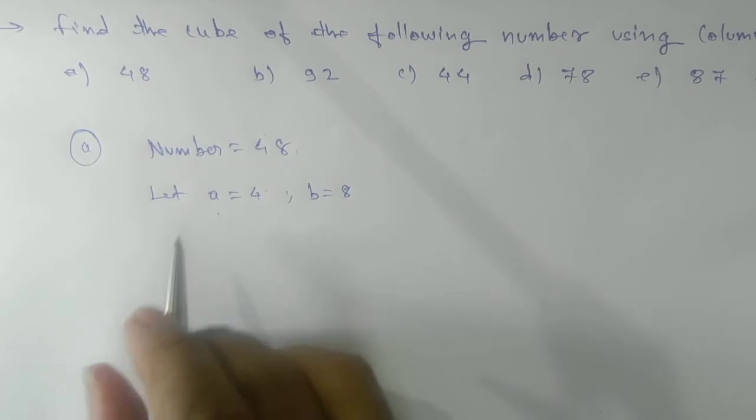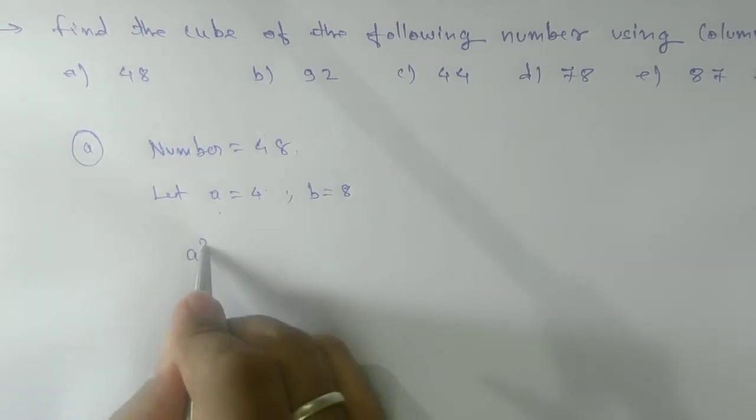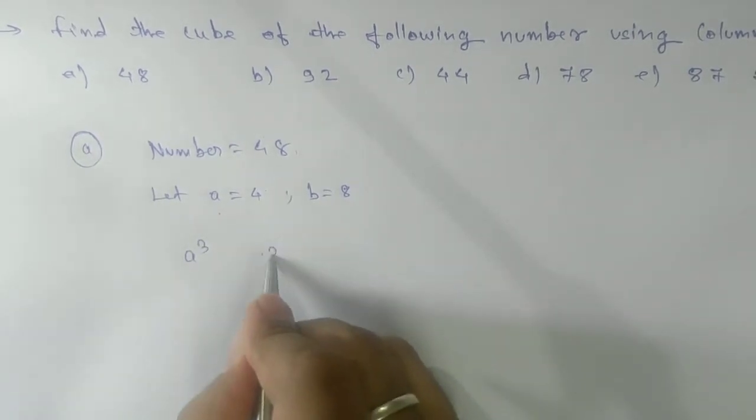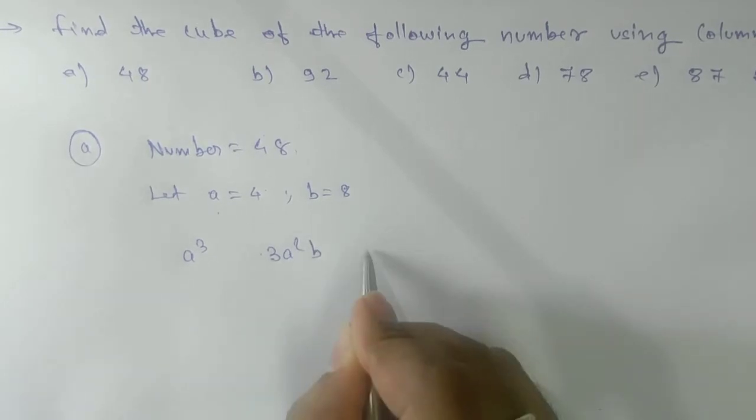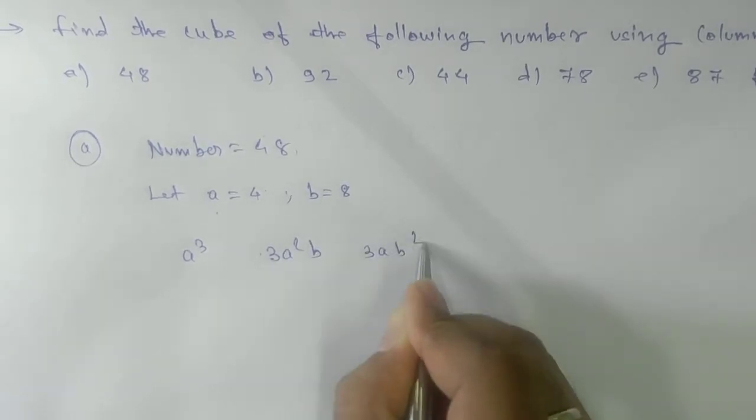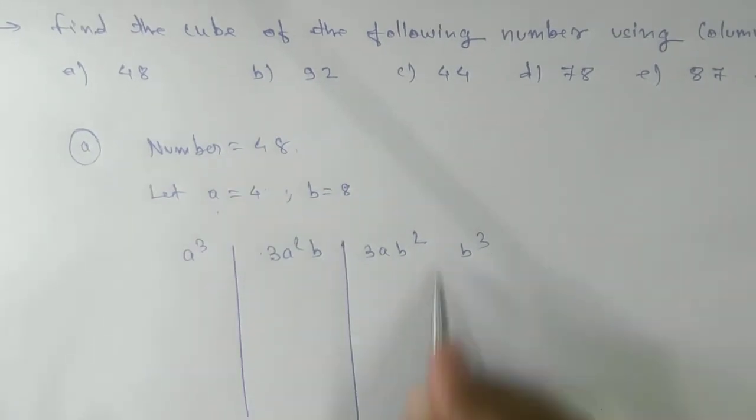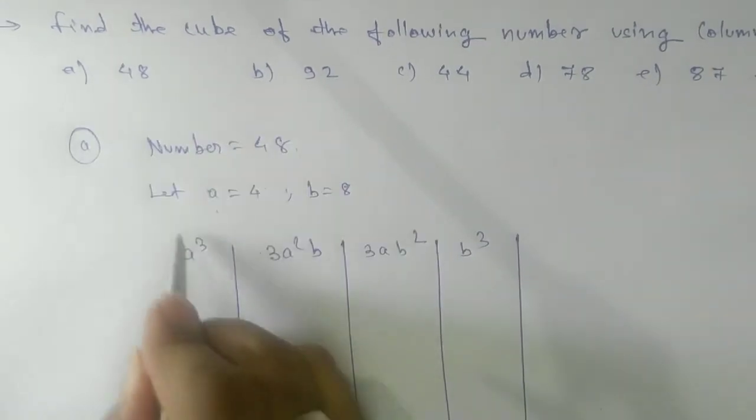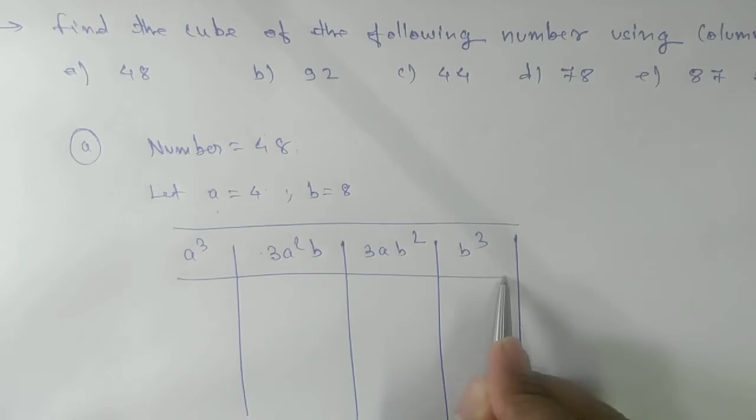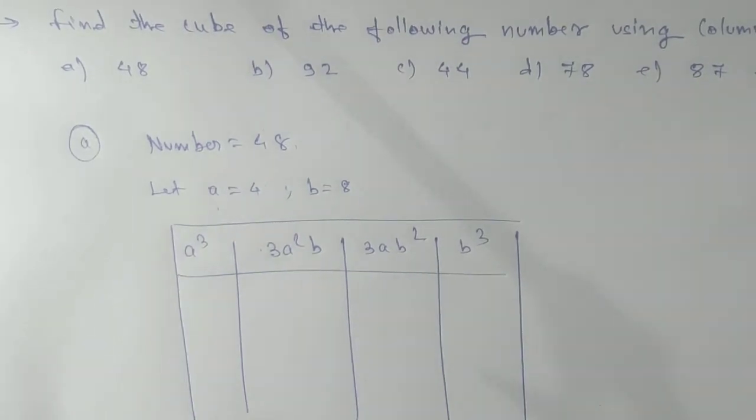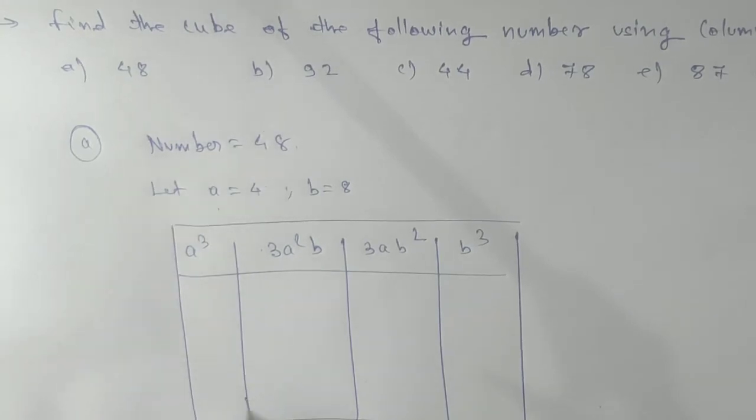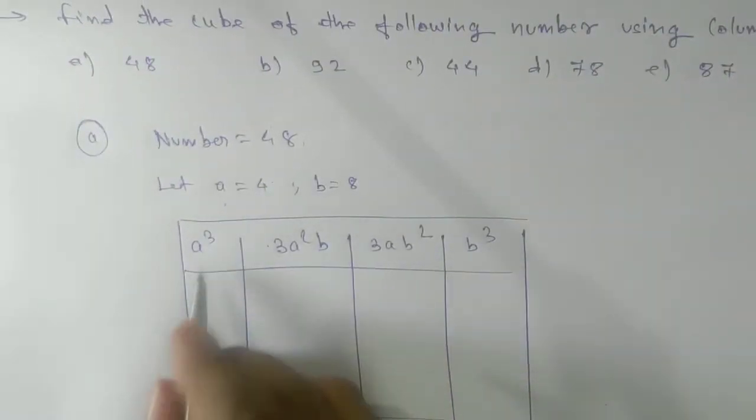Now you need to make columns for which one: (a + b) whole cube formula. That is a³ + 3a²b + 3ab² + b³. We're going to use this formula to find the cube of a number using column method.